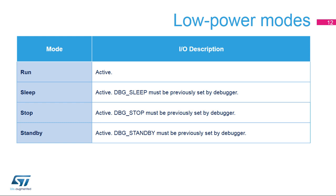The debug interface operates in all low-power modes. For sleep, stop, and standby modes, related bits must be configured in the DBG-MCU-CR register in order to prevent the clock and regulators from stopping when entering a low-power mode.